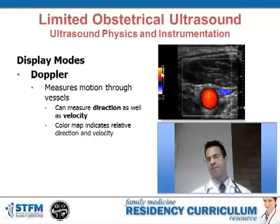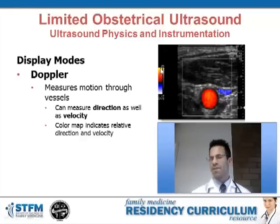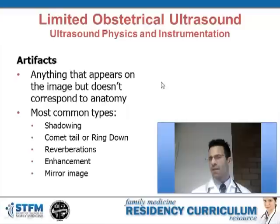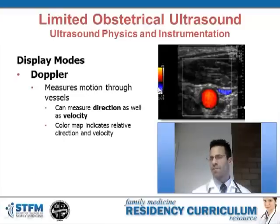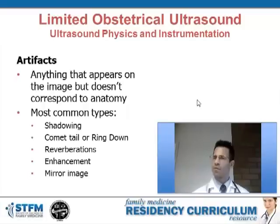Furthermore, we have a velocity map: the further we go from the middle line, the corresponding color represents an increasing velocity. In this color map, going from red to yellow represents slower to faster velocity, and going from blue to white also represents slower to faster velocity. In this image, the yellow in the middle represents faster flow than towards the outer aspect of the vessel, which would be slower.